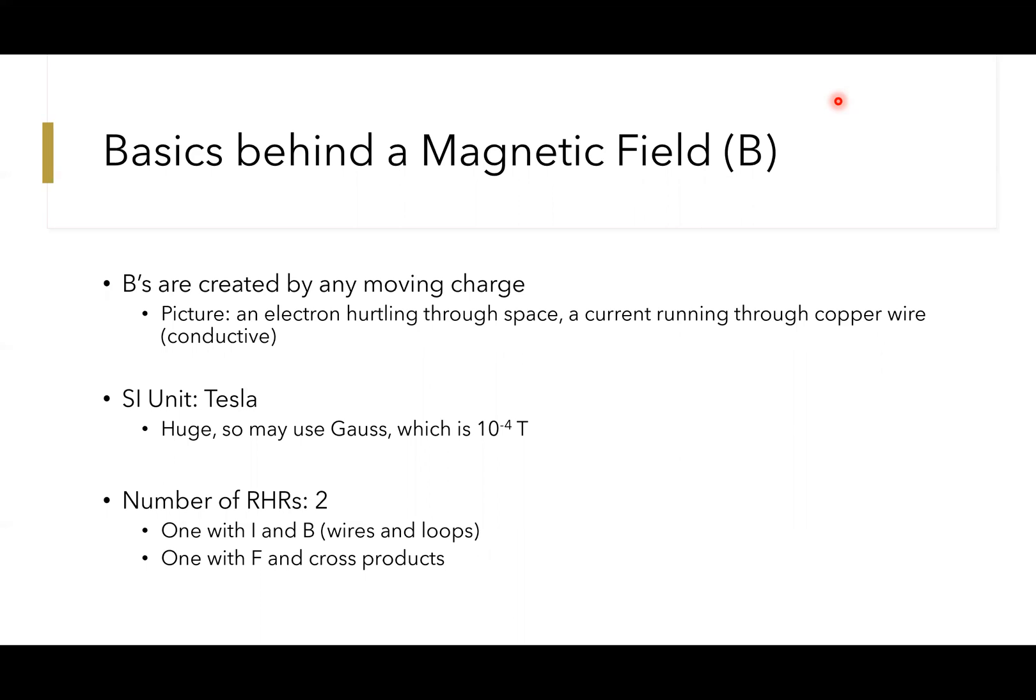The number of right-hand rules you can expect to see in this video are two. One we're going to use for wires and loops dealing with currents and finding the magnetic field. The other deals with magnetic forces and has a cross product.